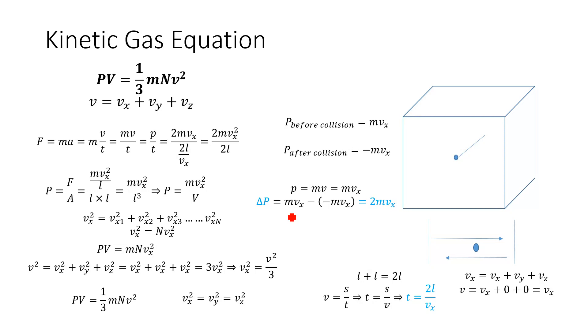Hello, today we are going to derive the kinetic gas equation, which is PV = 1/3 mnv², where P is pressure, V is volume, m is mass of the molecule, n is number of the molecules, and v² is the mean square velocity.